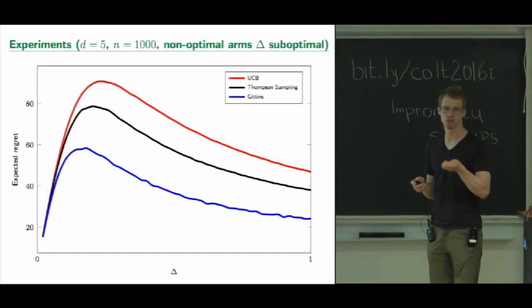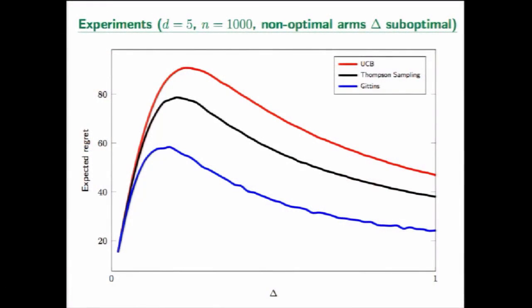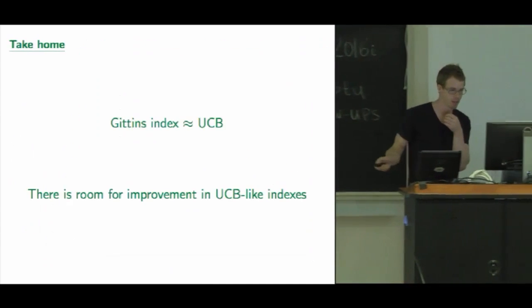Here's an empirical teaser: a simple setting with five arms, four of which are suboptimal by some delta. We compare UCB, Thompson sampling, and the Gittins index. The Gittins index shows a pretty decent improvement — about half the regret. This is plotted as a function of delta: when delta is zero or very large, every algorithm does well, but there's a worst-case regime in the middle where identification is hard. Running all kinds of experiments, you see the Gittins index really does well — and this is also true in the Bernoulli case, not just Gaussian.